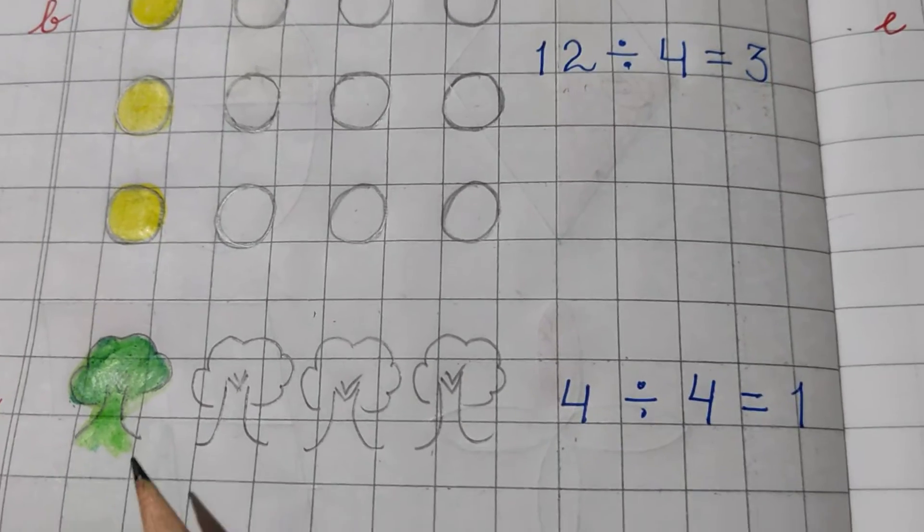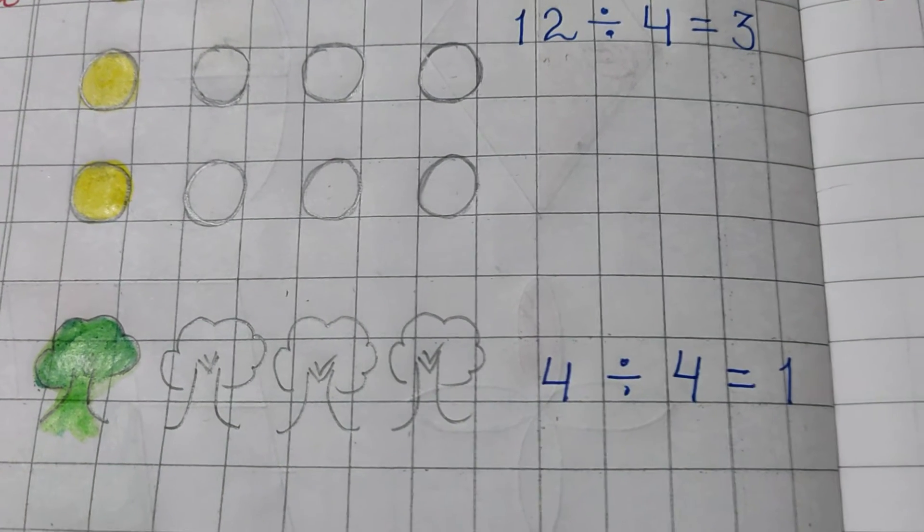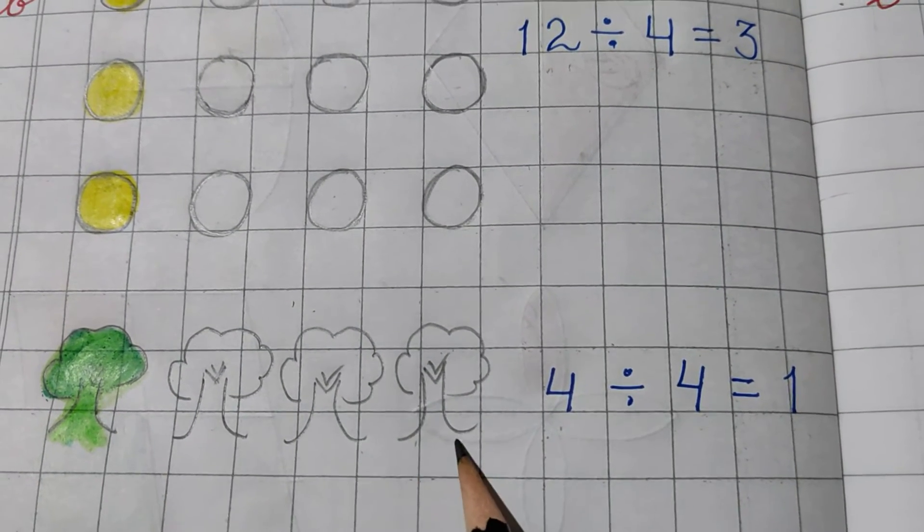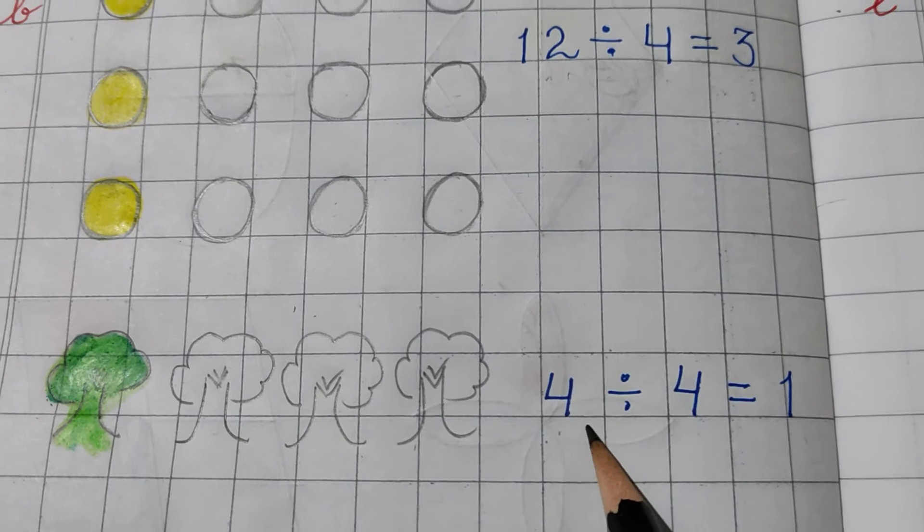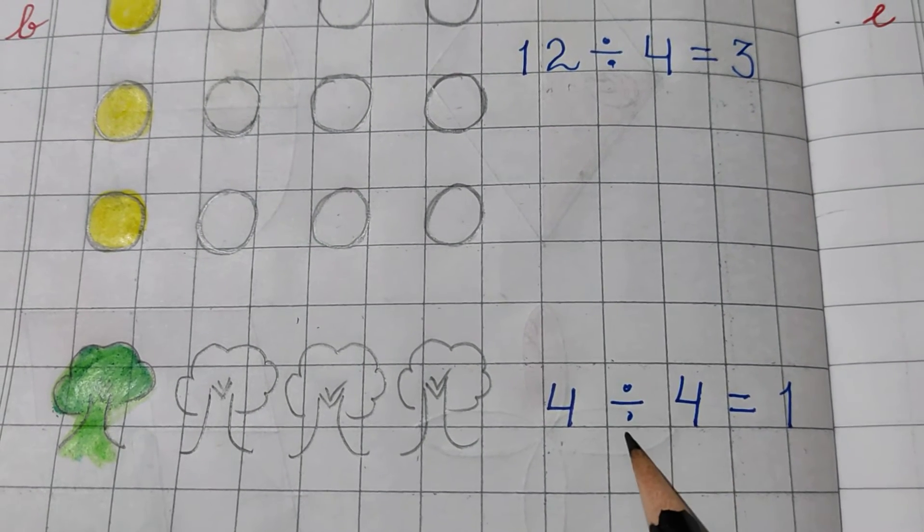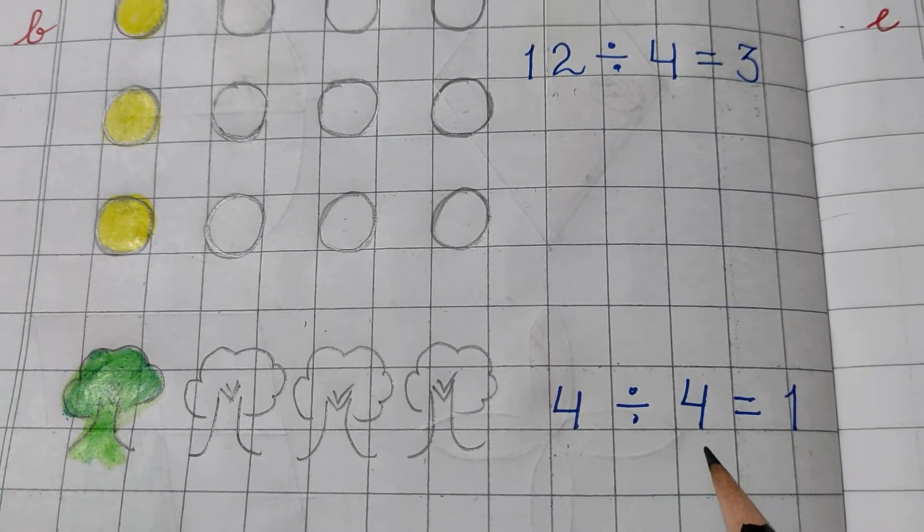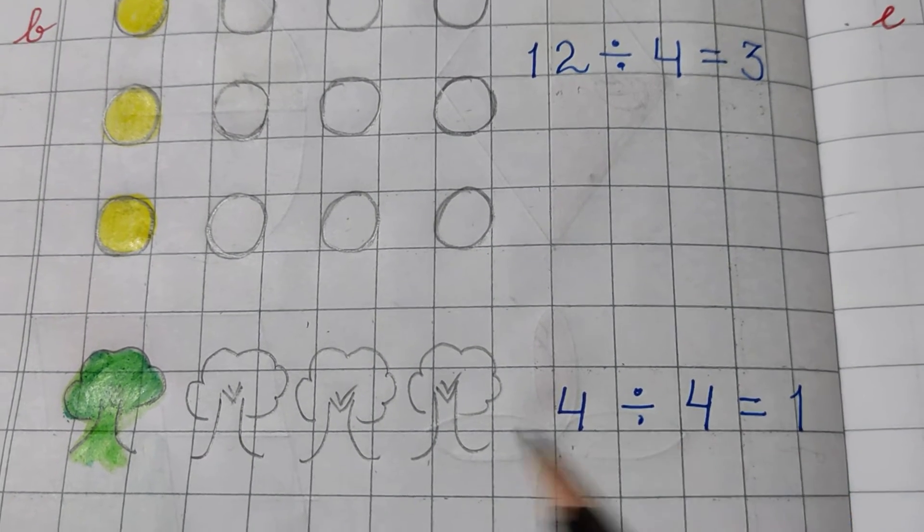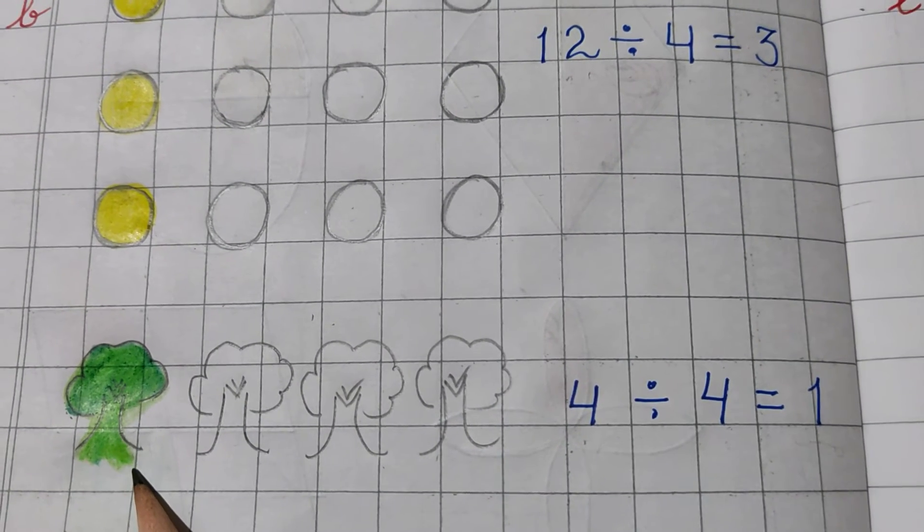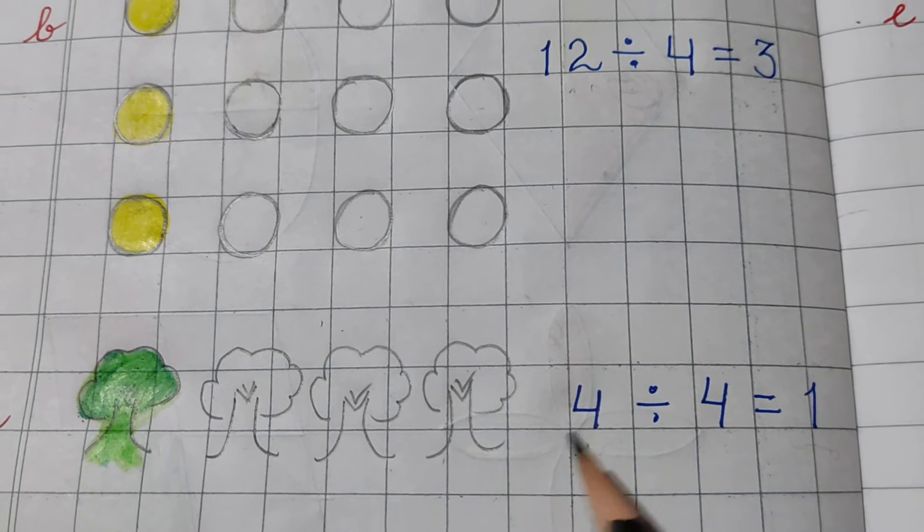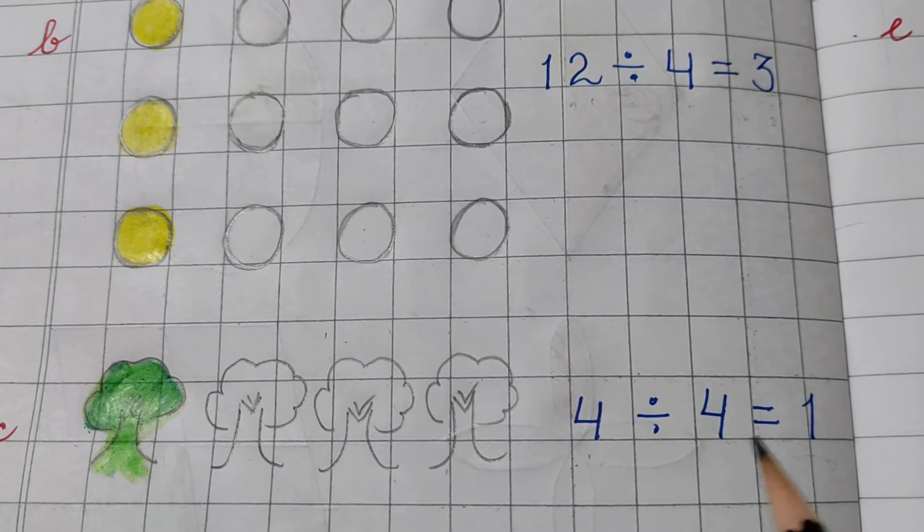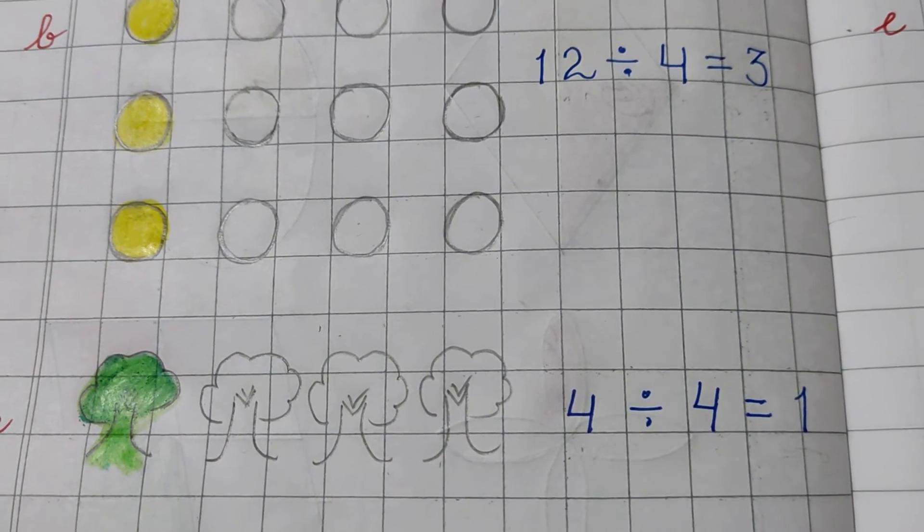In C part, I have drawn some trees here. Let's count 1, 2, 3, 4. These are 4 trees. So, I have written 4. We are doing one-fourth. That is why I have divided by 4. 4 times 1 is 4. One is the answer. So, I have colored only one tree here. That means, 4 ka one-fourth part, one hota hai.